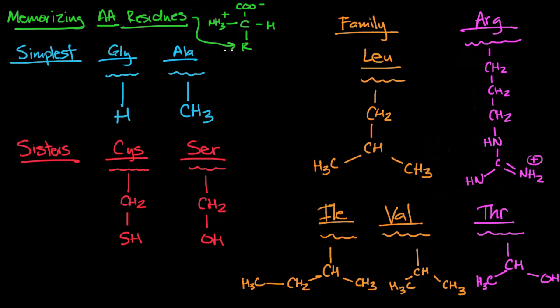The simplest one is glycine, where the R is just an H. To get alanine, all you have to do is replace the H with a CH3. So glycine, alanine, those are the simplest ones.